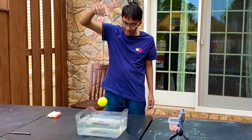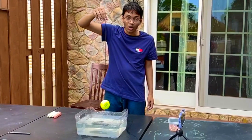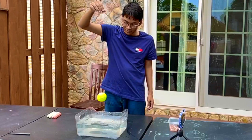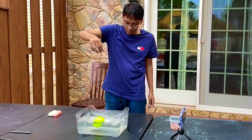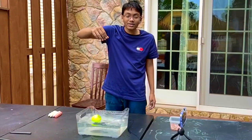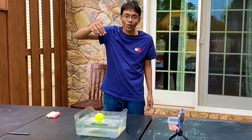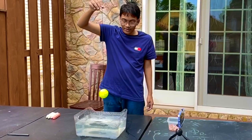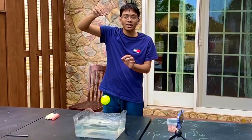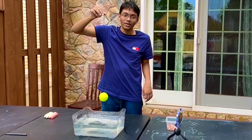Remember, transverse waves are waves vibrating at right angles — 90 degrees — to the direction of propagation. I'm going to show you that right now using this tennis ball and this tub of water.